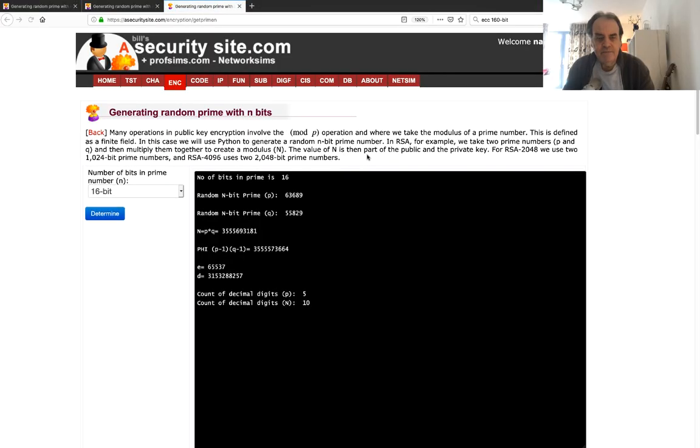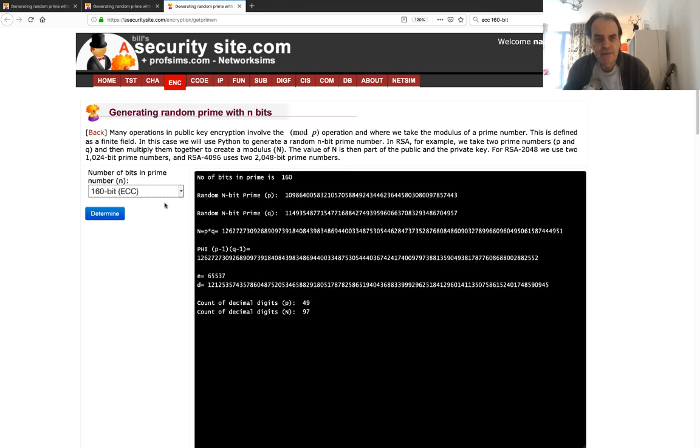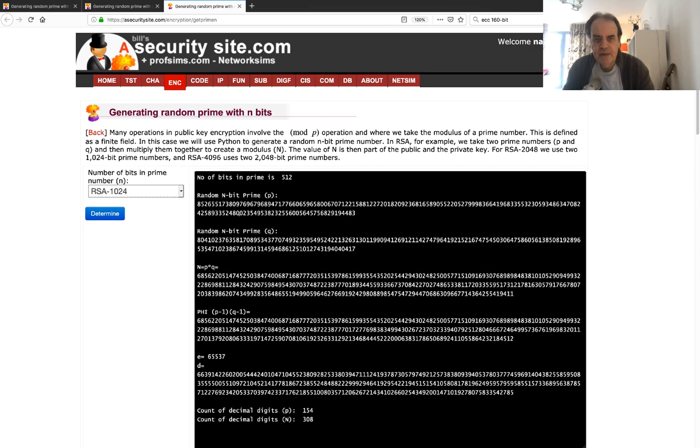Okay, so you should be able to try this out. There's 160 bits - you can see the size of the prime numbers there. But if we go up to 1024, the prime numbers become fairly large.